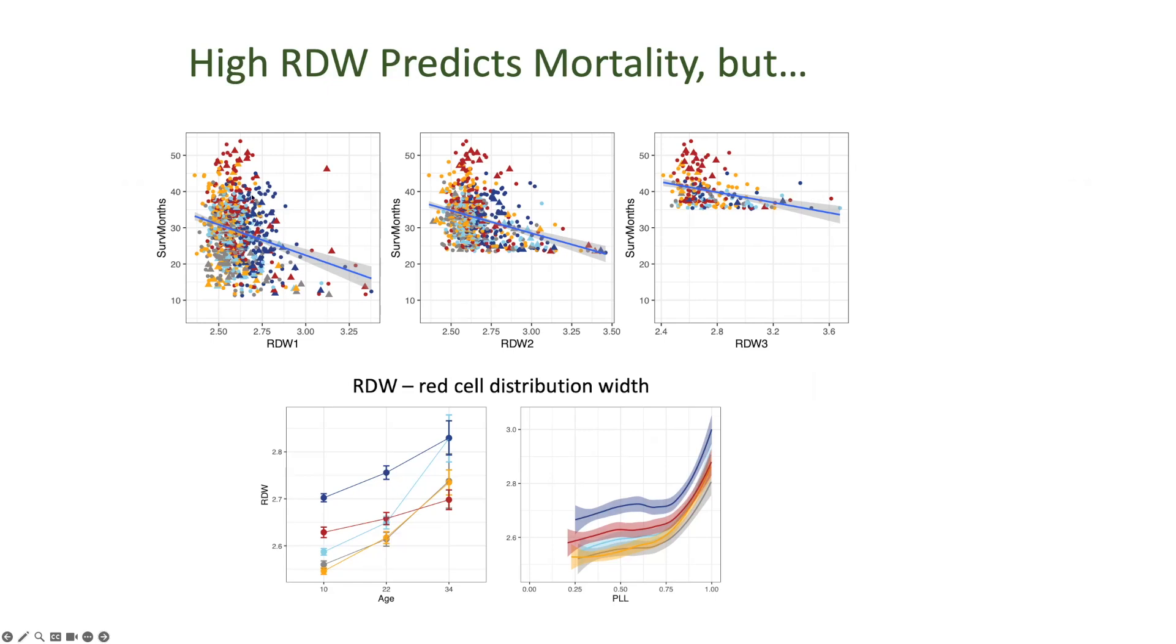So I picture it, if you had a movie, if you could continuously watch this through time, I just picture these points kind of rolling down here, and then the mice are dying, rolling down and dying. So RDW is a really interesting measure. High RDW, short lifespan.